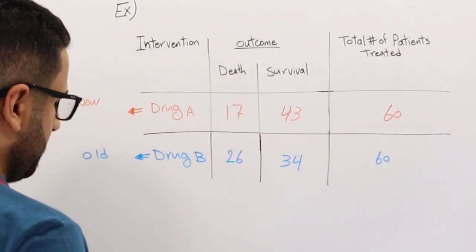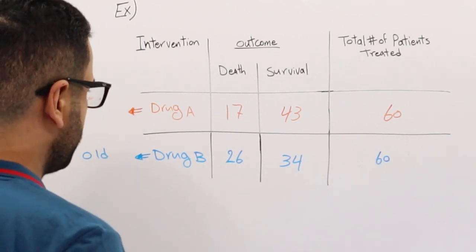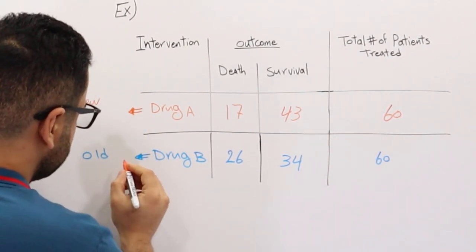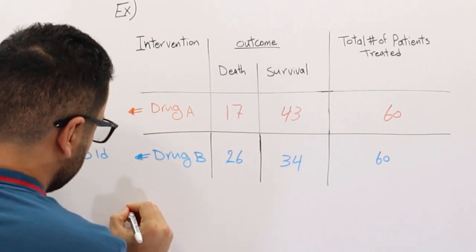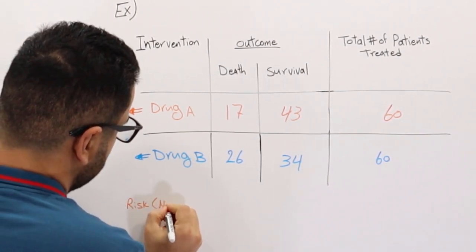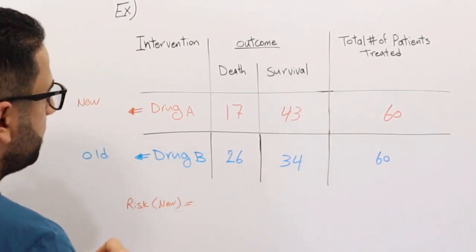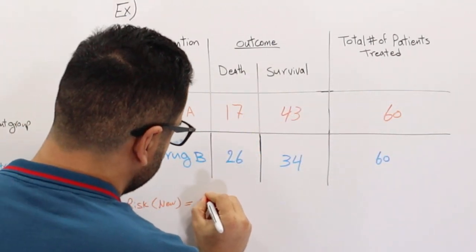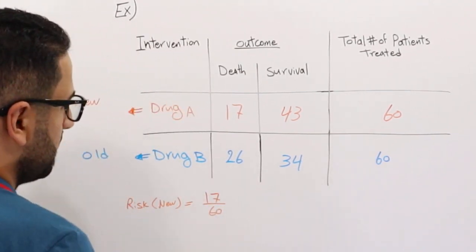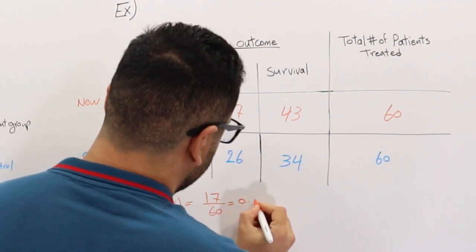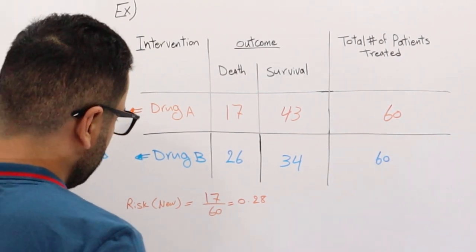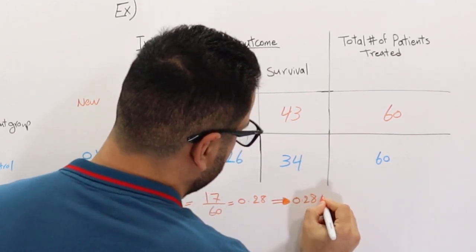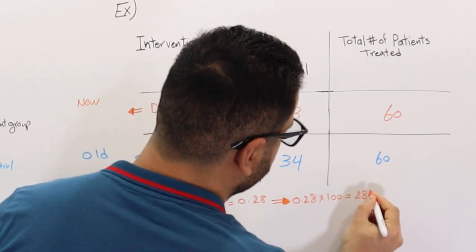To calculate the absolute risk reduction, I first need to calculate the risk in each group. For the new medication, the risk equals the number of patients who died over the total: 17 over 60, which gives 0.28. Multiplying by 100 gives us 28 percent.